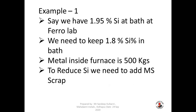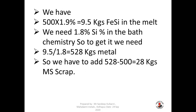Sometimes we need to reduce carbon and silicon. In the first example, silicon is 1.95% in the bath whereas we require 1.8%, so we have to reduce silicon by 0.15%. The metal in the furnace is 500 kg, and to reduce silicon we have to add MS scrap. Calculation: 500 kg × 1.95% = 9.5 kg of silicon in the melt. We need 1.8%, so 9.5 ÷ 1.8% = 528 kg of metal required. Therefore 528 − 500 = 28 kg of MS scrap has to be added to reduce silicon.